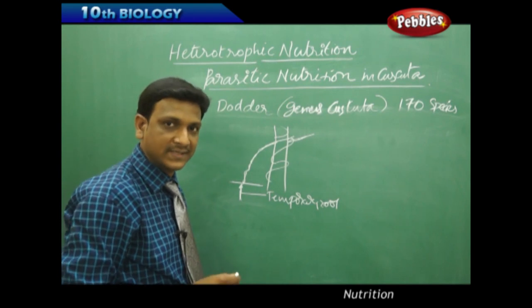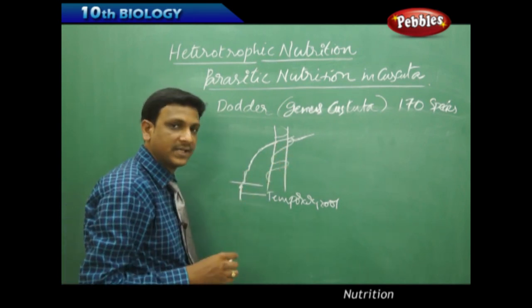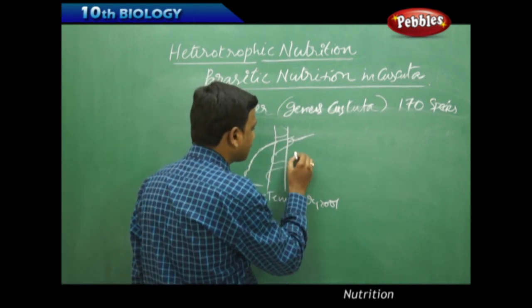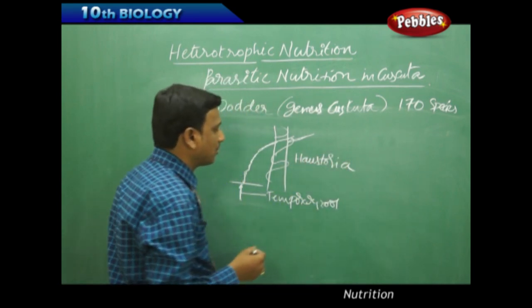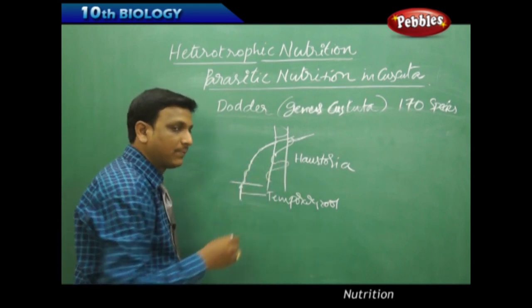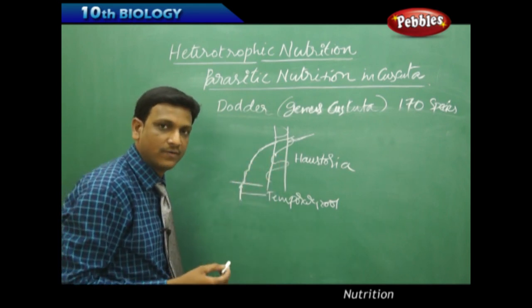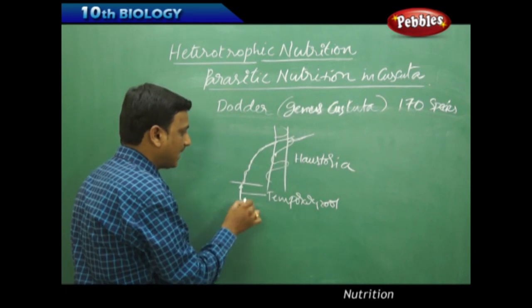Once it twines around the host plant, it produces a sharp hook-like structure called haustoria. With the help of the haustoria, it absorbs the food and water from the host plant.